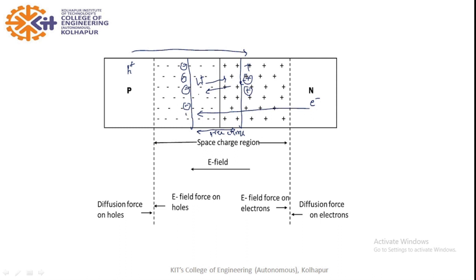On the p-side there are negative ions and on the n-side there are positive ions. The positive ion layer repels holes from the p-side, and the negative ion layer repels electrons from the n-side. So a potential hill or potential barrier is developed at the junction, which we call the built-in potential or junction potential. This junction potential prevents further diffusion of majority carriers.